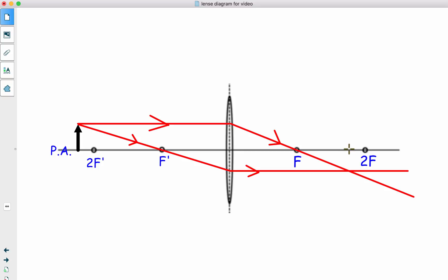Where the two rays cross is where we will find our image. So if we are to SALT this, the size is smaller than the object. Attitude is inverted. Location is between F and 2F. And this is a real image.